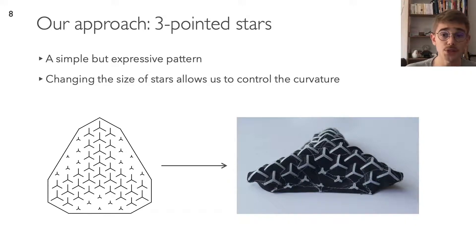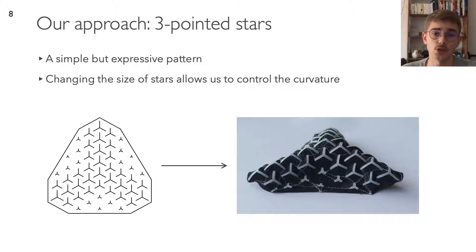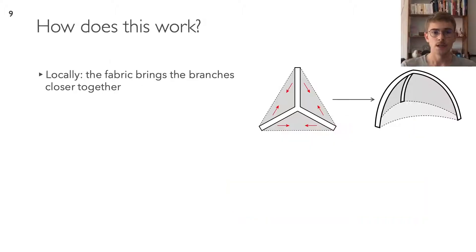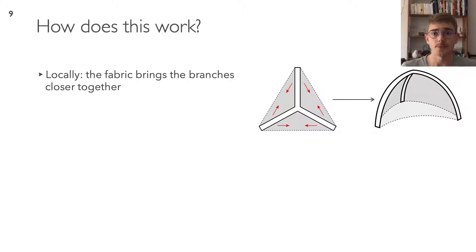One particular quality of this pattern is its ability to naturally create convex domes with positive Gaussian curvature. There are several effects that explain why three-pointed stars are well suited to create curvature when printed on fabric.